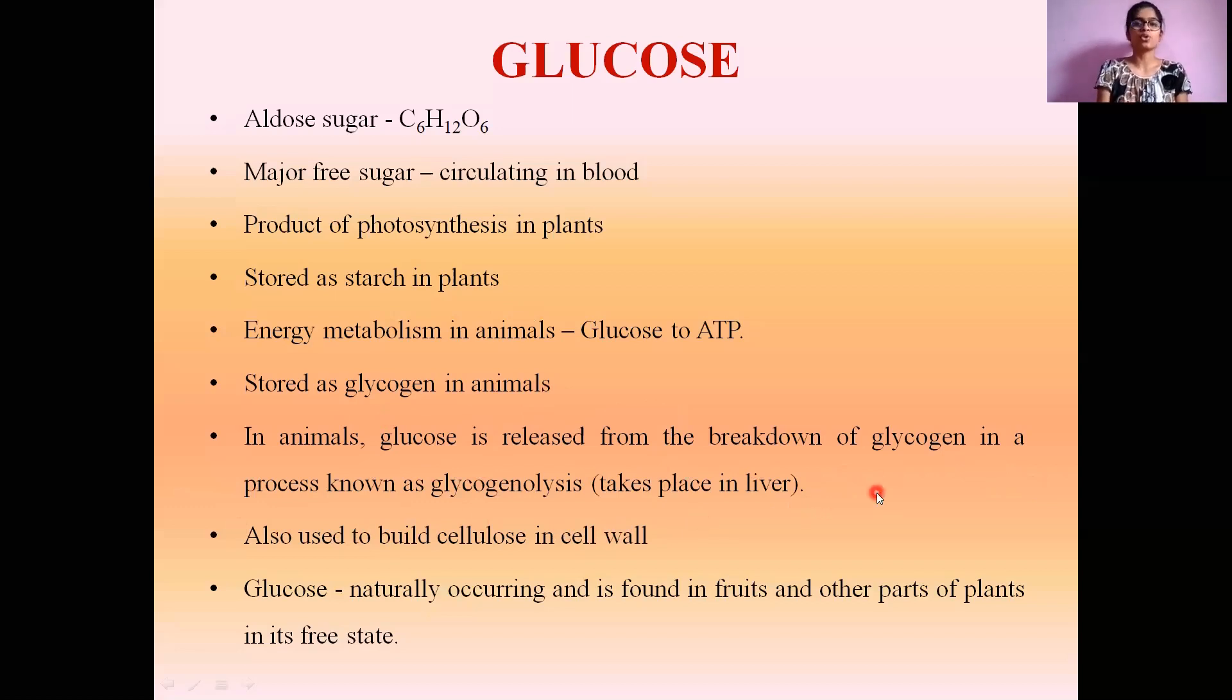Whenever there is a need for glucose and diet doesn't provide enough, glycogen is broken down to glucose through glycogenolysis. Glucose is also used to build the cell wall in animals, whose main constituent is cellulose, a complex polysaccharide consisting of a chain of glucose units. Glucose is naturally occurring and is found in fruits and other parts of plants in its free state.